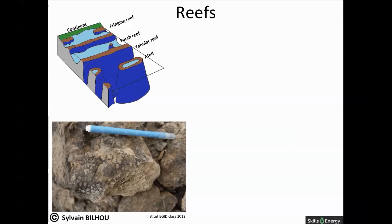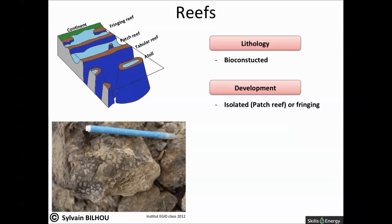The uppermost slope can also be characterized by reefs. They are bioconstructed by corals or other organisms, and the dominant lithology is boundstone. Their size is clearly important when considering the volume of reservoir petroleum. Reefs can be fringing or isolated, the latter then called patch reefs.